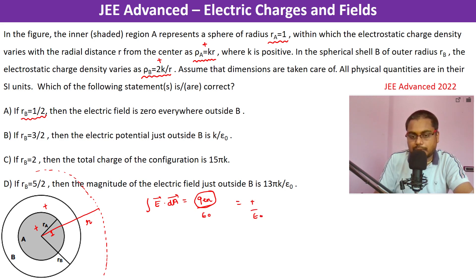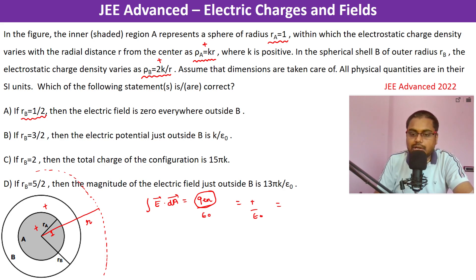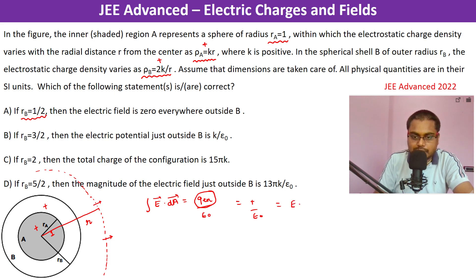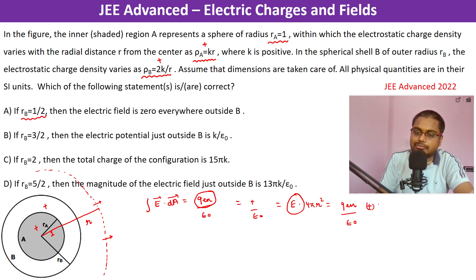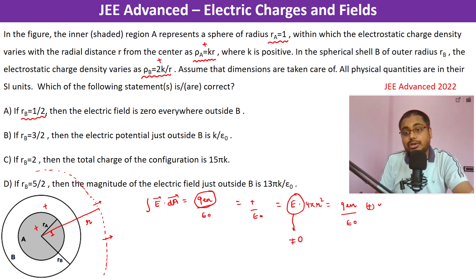Since the configuration is symmetric, the electric field is the same at all points on the Gaussian surface, so E × 4πr² = Q_enclosed / ε₀. E comes out to be a non-zero, positive value. Therefore option A is false — A is not correct.